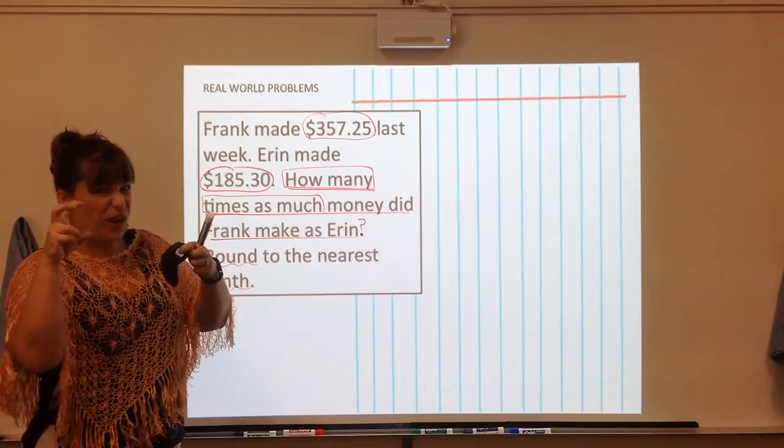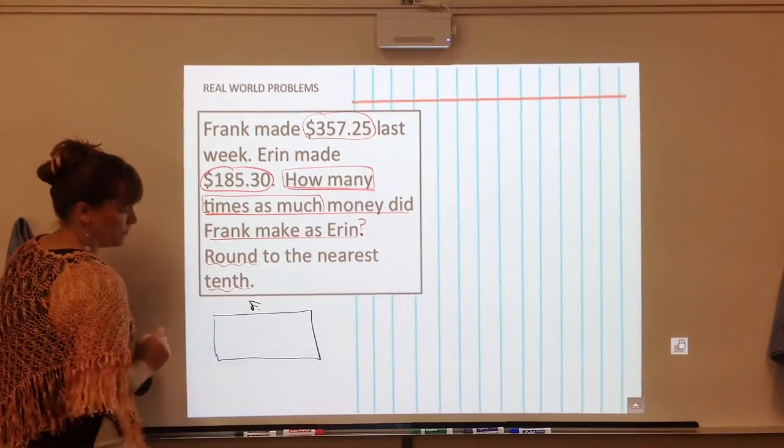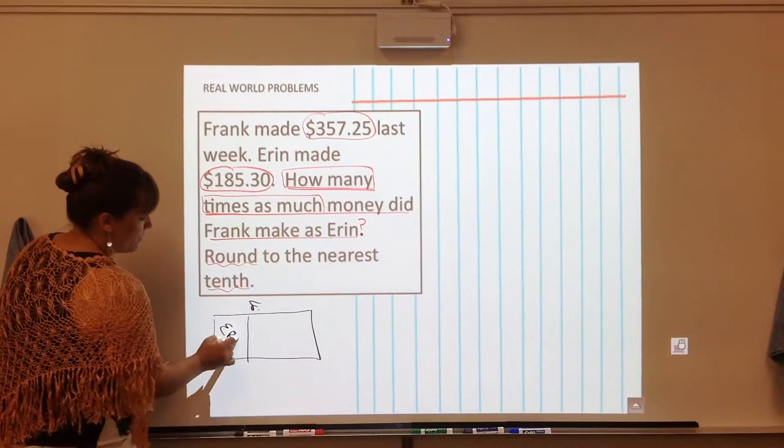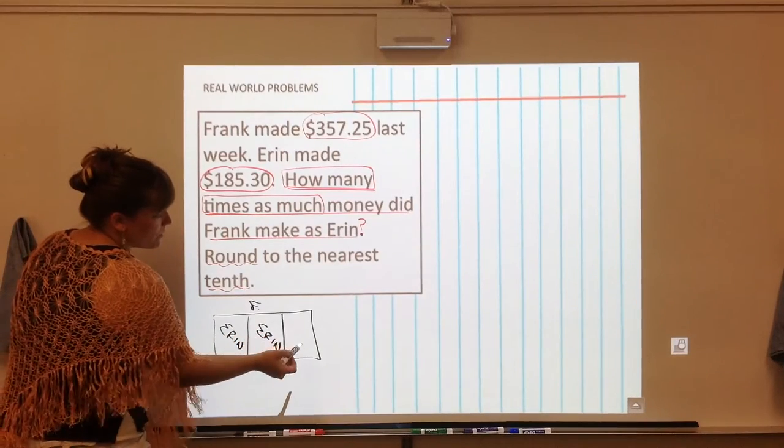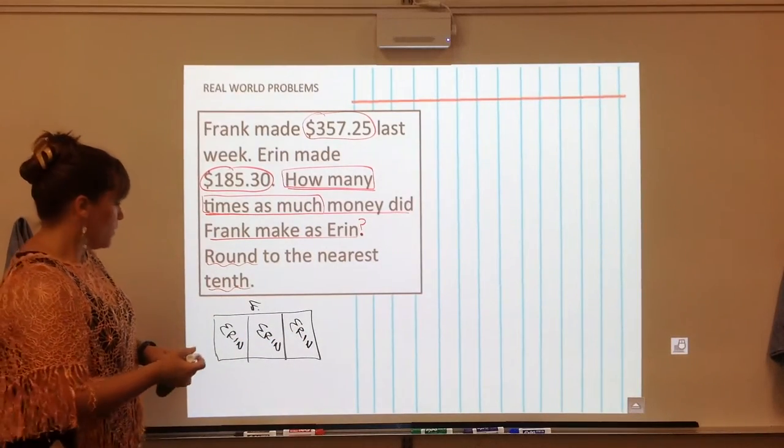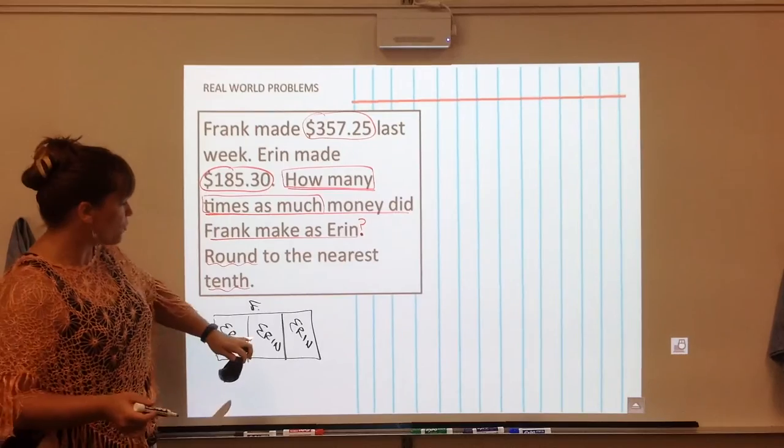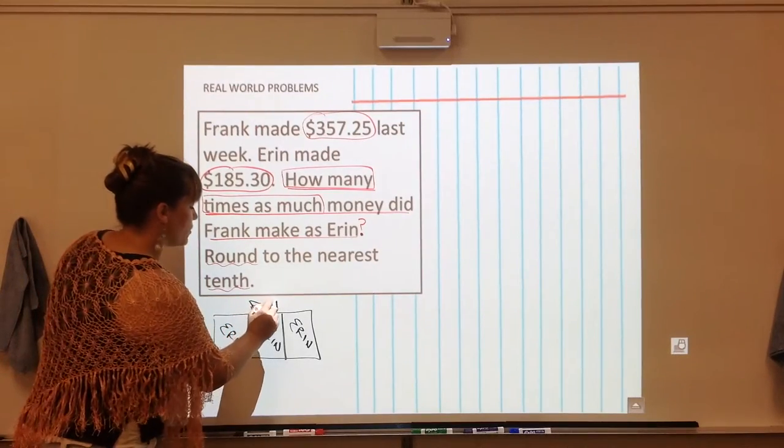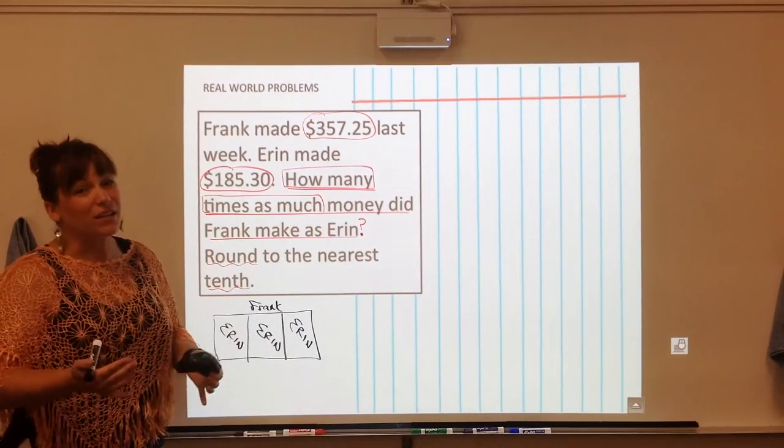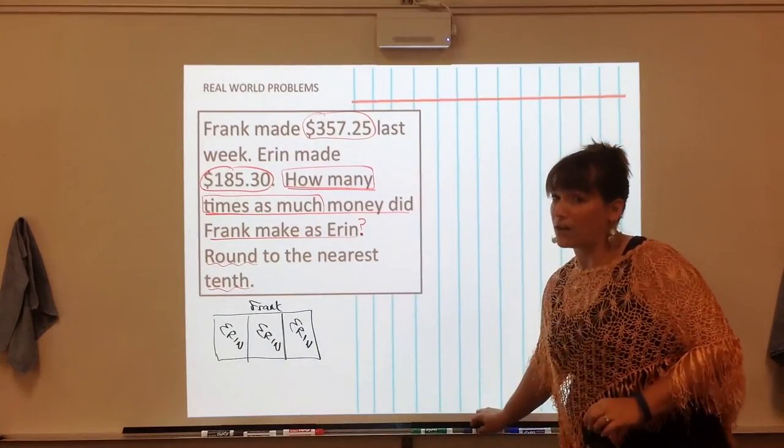So we are going to be dividing and in this case Frank has more money so he's the one that we want to split into groups of Erin's amount. I can draw a picture as well. This represents Frank's amount. We want to know about how many times can we put Erin's amount in here. Can we do it twice? Is it two times amount? Two times the amount? Is it three times the amount? We don't know until we actually divide. That is something that you're going to have to do and it is not always problem specific. Not one clear cut answer. The bigger number is not always the dividend.